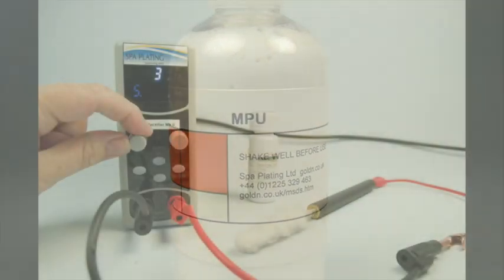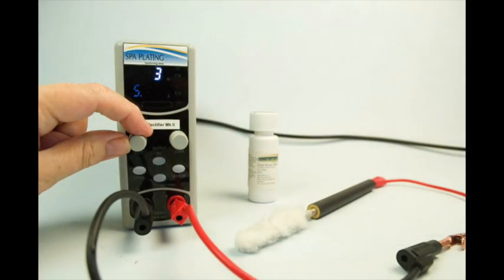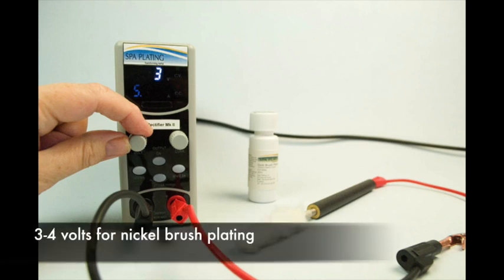Set up the MF rectifier mark 2 according to the instructions which can be found on the product page. Set the volts in the range of 3 to 4, which is the voltage stated on the side of the nickel brush plating bottle.